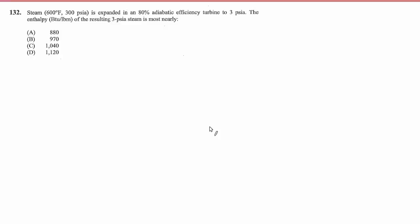Problem 132: Steam at 600 degrees and 300 psi is expanded in an 80% adiabatic efficiency turbine to 3 psi. The enthalpy in BTUs per pound of the resulting 3 psi steam is most nearly what?